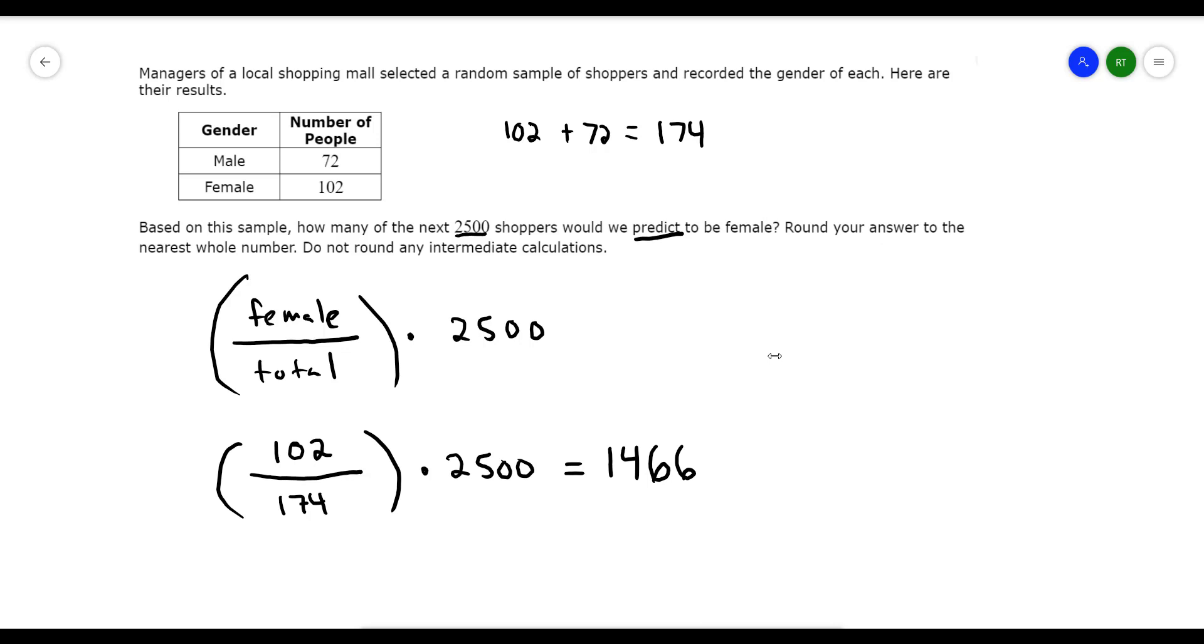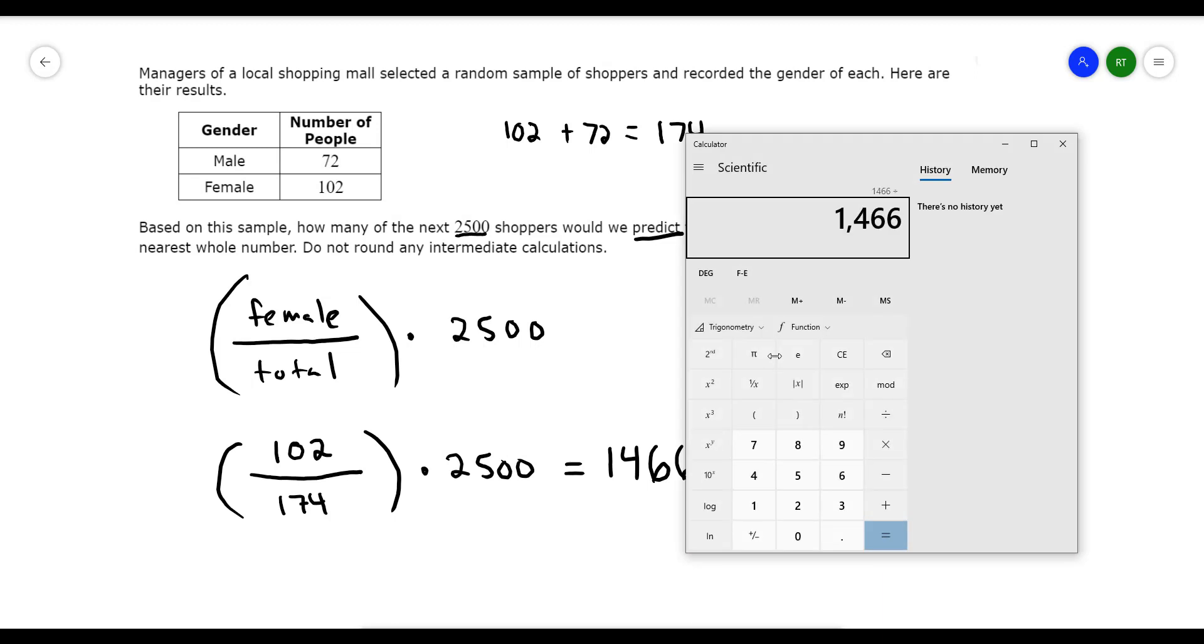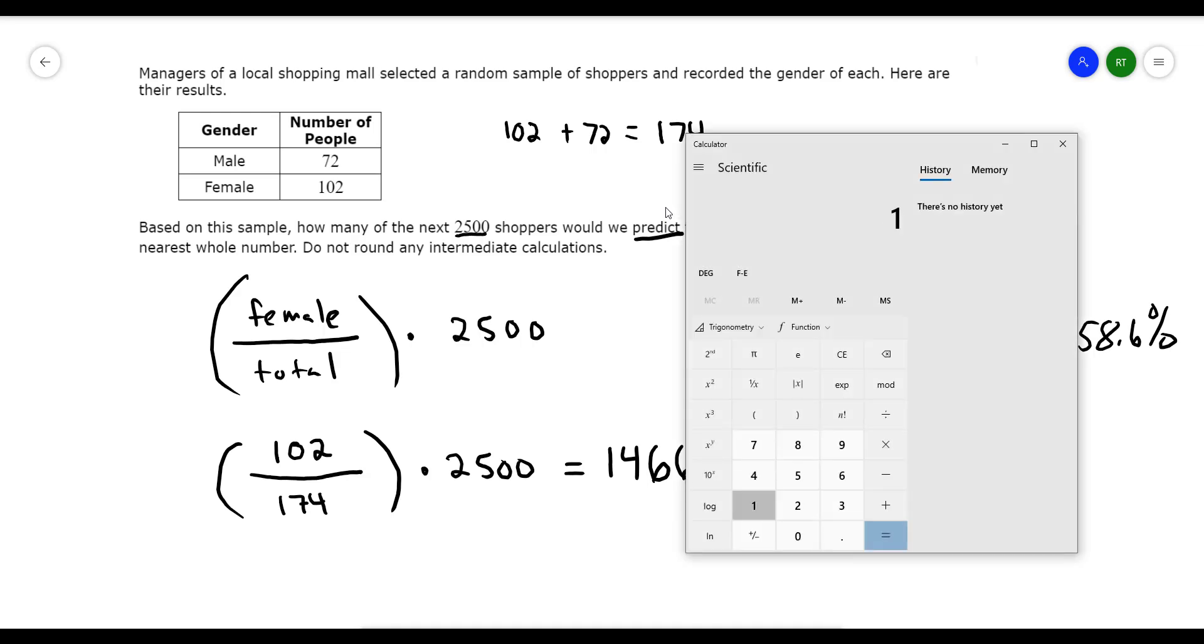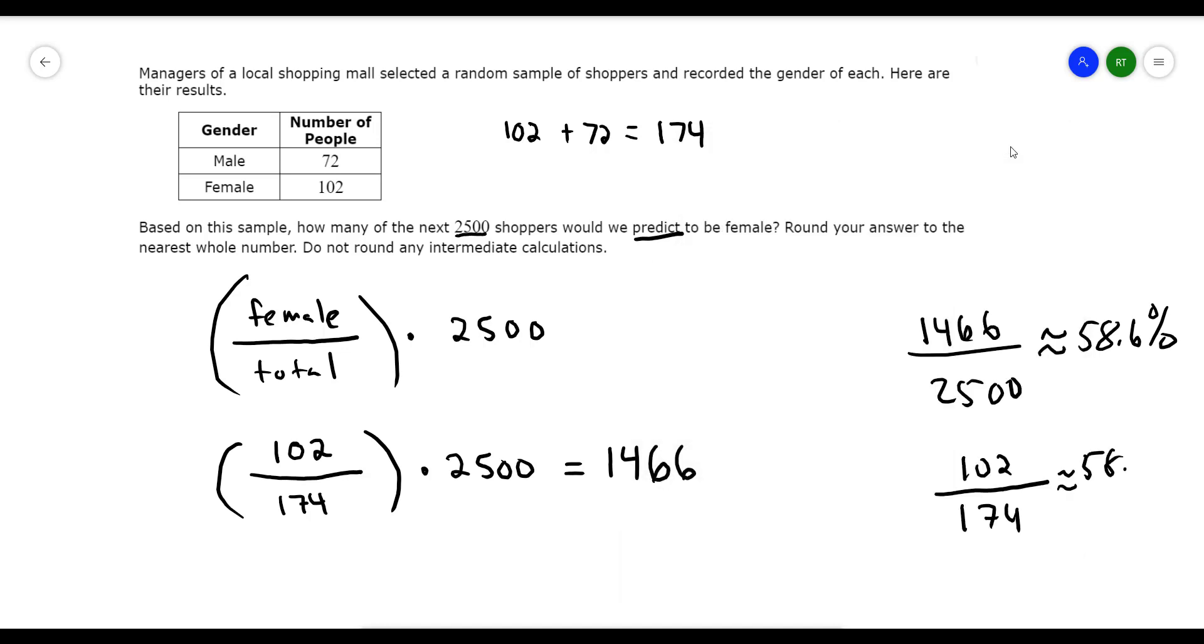And to double check that, I can say, look at 1,466 out of 2,500. If I were to divide that in my calculator, 1,466 divided by 2,500, look at what I get. That's about 58%, about 58.6%. And if I did the original calculation from before, we had 102 females out of 174. And if I found the approximation for that one, if I do that in a calculator, 102 out of 174 is, you can see here, about the same thing, 58.6%. Therefore, I know that my prediction is accurate.